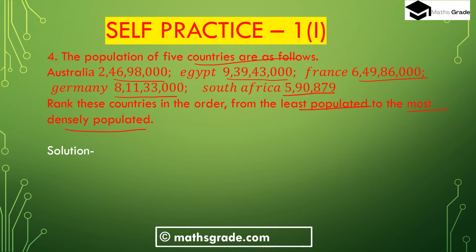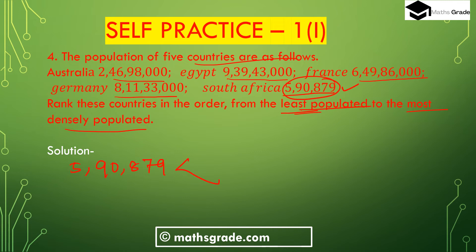Australia's population 2,46,98,000 is an 8-digit number. Egypt, France, and Germany are also 8-digit numbers. South Africa's population 5,90,879 is a 6-digit number. So South Africa is the smallest and therefore the least populated country.